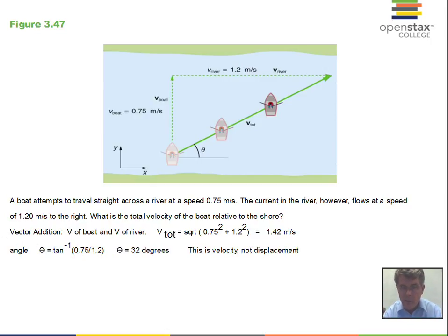We've calculated velocity here, not displacement. If we had 10 seconds of motion, we could calculate the magnitude of the displacement: rate times time, given a constant river current and constant rowing. We'd have 14.2 meters at this same angle, 32 degrees. But the calculation I did here was the velocity.